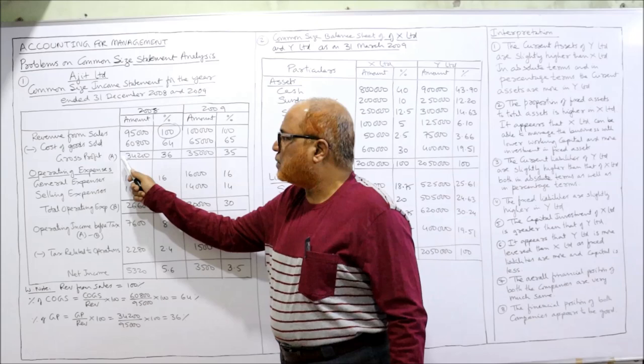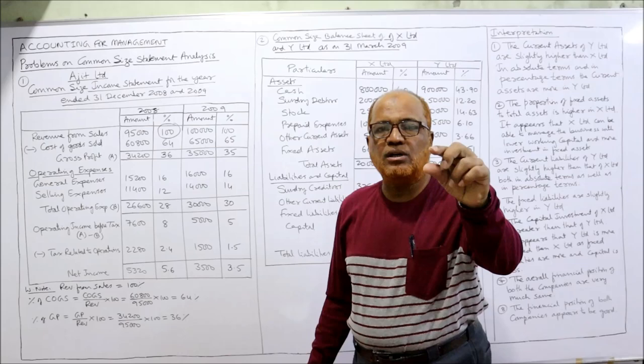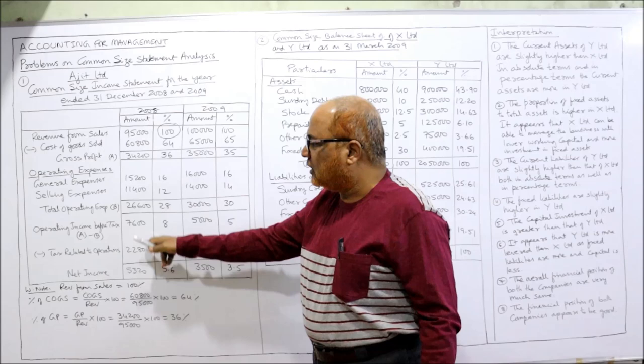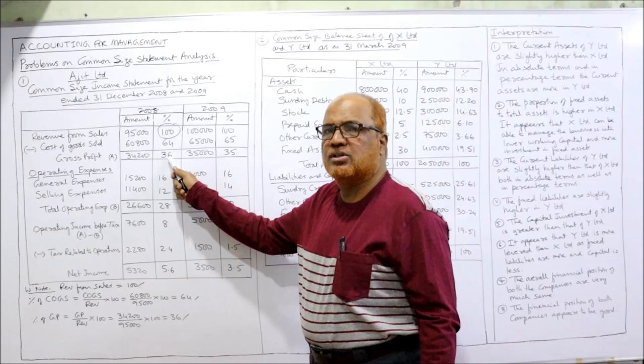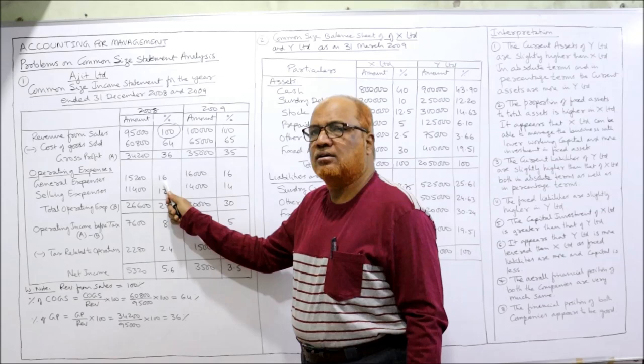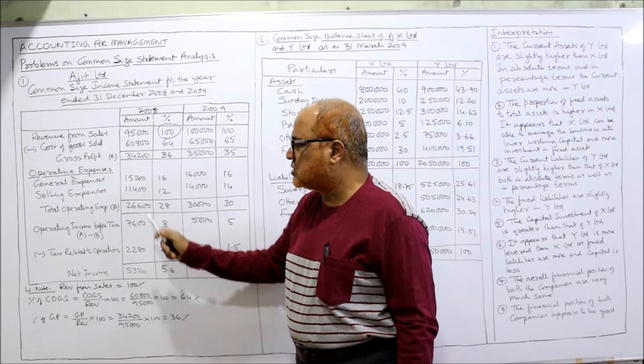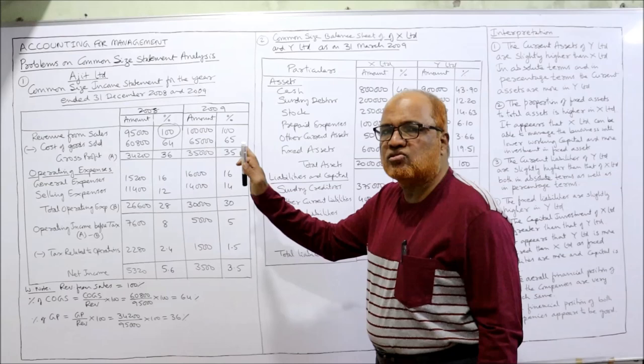Gross profit: 34,200 divided by 95,000 into 100 equals 36 percent. The denominator is always 95,000 for 2008; the numerator changes for each item. So 15,200 divided by 95,000 into 100 is 16 percent; 11,400 divided by 95,000 into 100 is 12 percent. Like this, all values go in the numerator with denominator 95,000 multiplied by 100 to get the percentages.